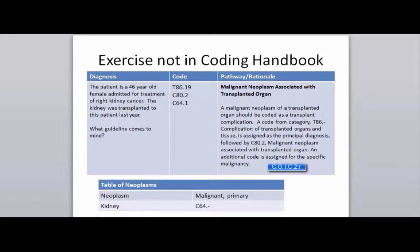A malignant neoplasm of a transplanted organ should be coded as a transplant complication. The guideline tells us we're going to use a code from category T86, which is complication of transplanted organs and tissues, as our principal, followed by C80.2 malignant neoplasm associated with a transplanted organ, and then an additional code assigned for the specific malignancy.